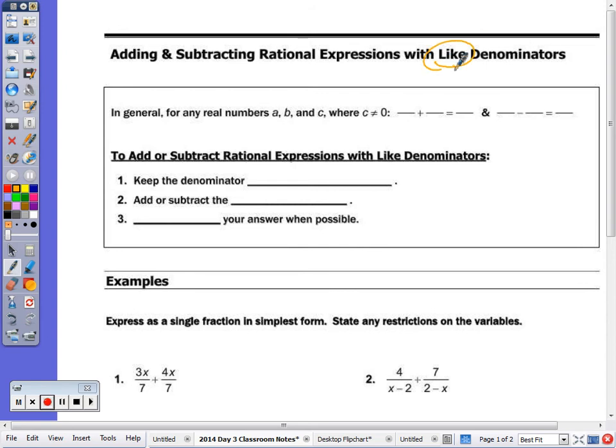But today what's most important is that you have like denominators. So in general, for any real number A, B, and C, where C doesn't equal 0. So that's a restriction, that must mean the C is my denominator. So if I have A over C plus B over C, we keep the C and add the numerators. It would be the same for subtraction.